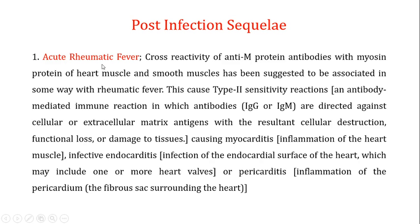Acute rheumatic fever is actually the cross-reactivity of the anti-M protein antibodies with the myosin protein of the heart muscle and smooth muscles. It is this cross-reactivity of the anti-M protein antibodies with the myosin protein of the heart muscle and smooth muscles that has been suggested to be associated with acute rheumatic fever.